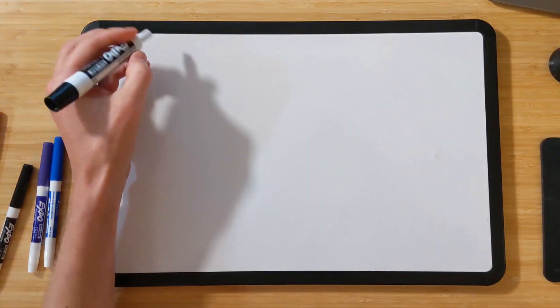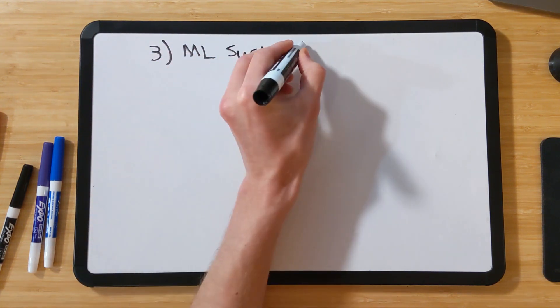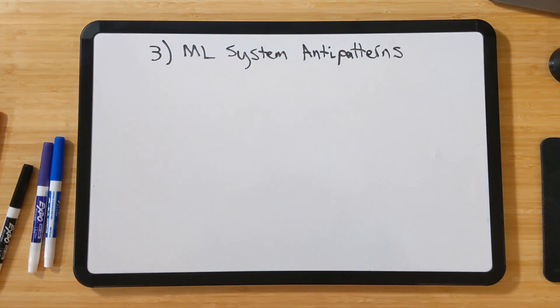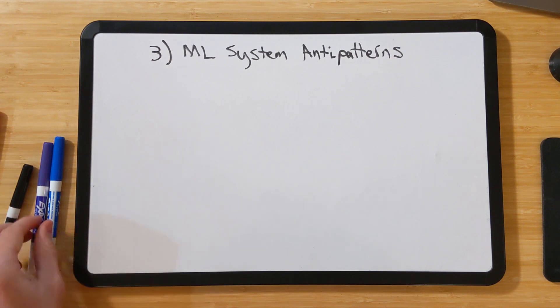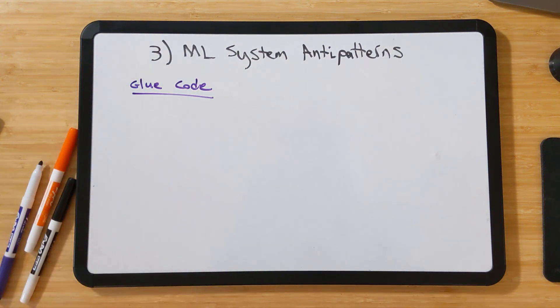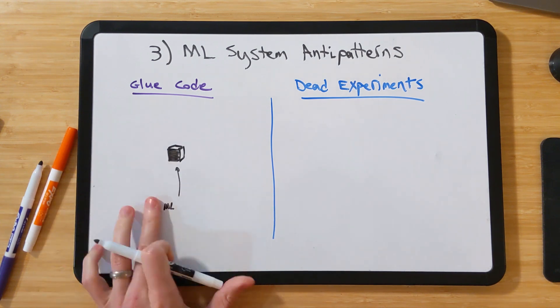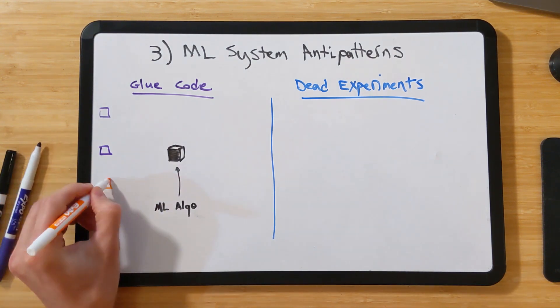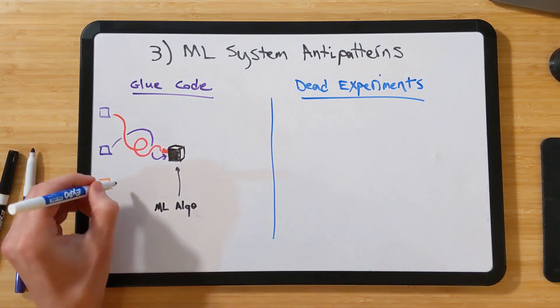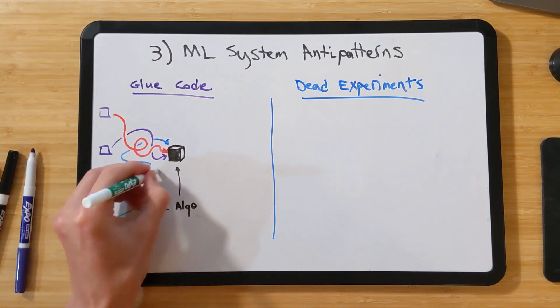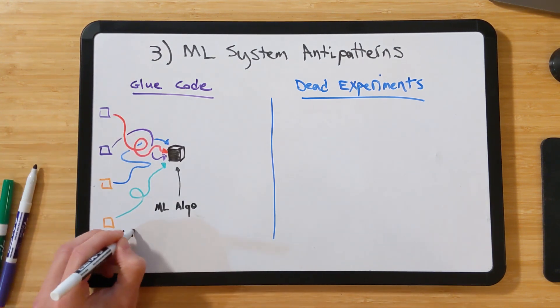In addition to the coupling and data-related challenges described so far, there are also some design anti-patterns that are common in machine learning systems, and can lead to incurring a lot of technical debt. One such pattern is the use of excessive glue code. Oftentimes, the core machine learning algorithms are implemented as general-purpose, self-contained packages. While this may seem like a good idea, because people can reuse those implementations,